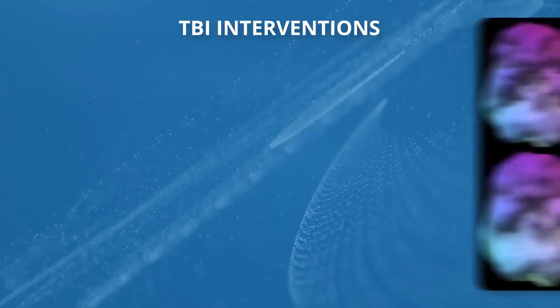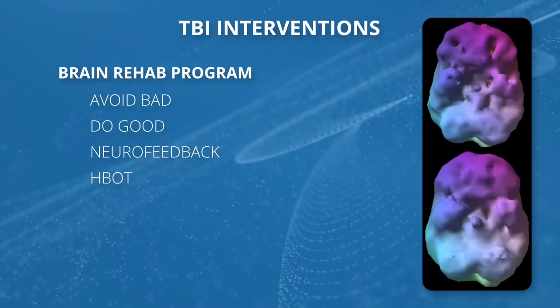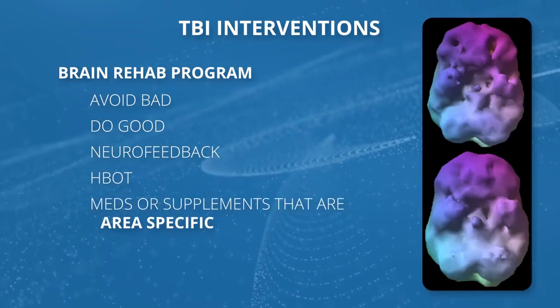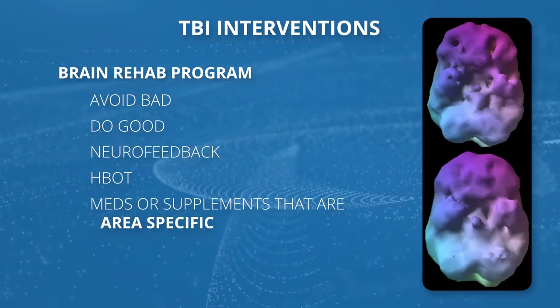There's a very interesting term called crossed cerebellar diaschisis. If you hurt the front part of the brain, it'll turn off the opposite side of the cerebellum — so crossed cerebellar diaschisis just means low blood flow. We see traumatic brain injury in 40% of our patients, so we're always trying to rehabilitate their brains. Avoid the bad, do the good — neurofeedback, hyperbaric oxygen, medications or supplements targeted to overall brain health and whatever system has been hurt.